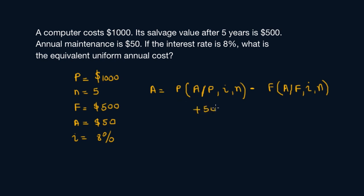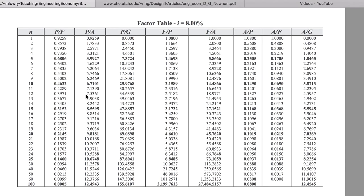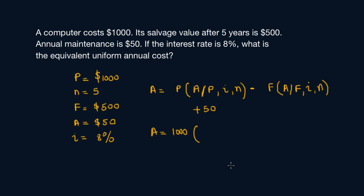The total would be P, that's $1,000. We go back to the factor table and look at A given P at 8% for five years. A/P is right here, 8%, five years. That's 0.2505, so you multiply by 0.2505.